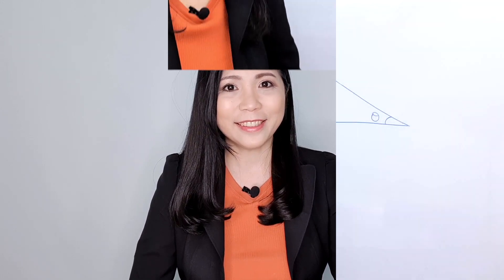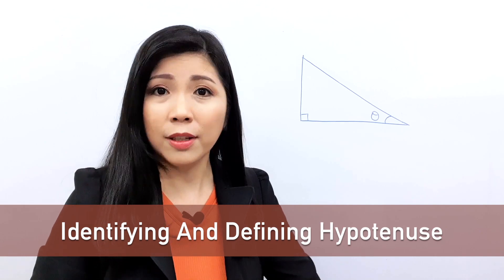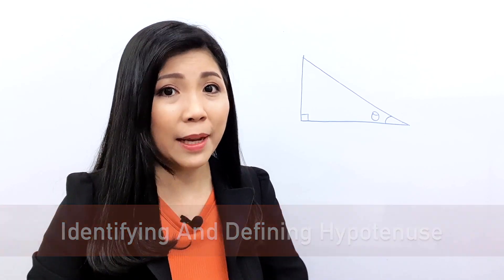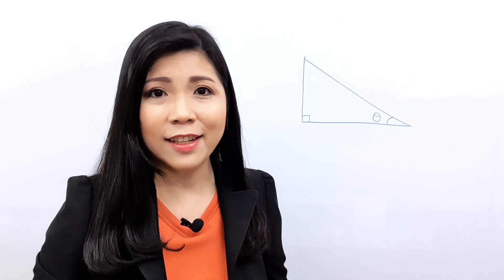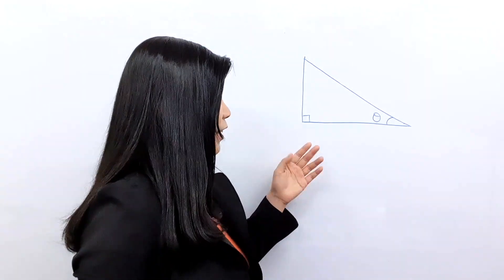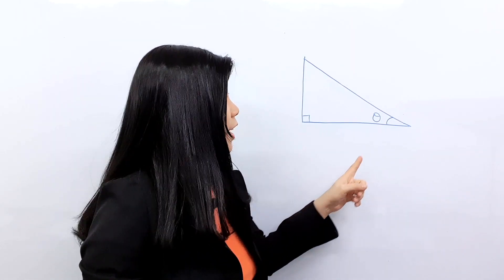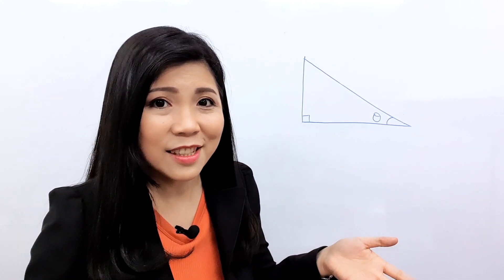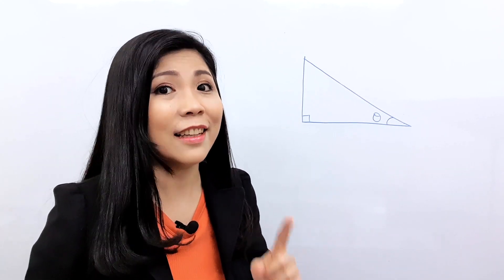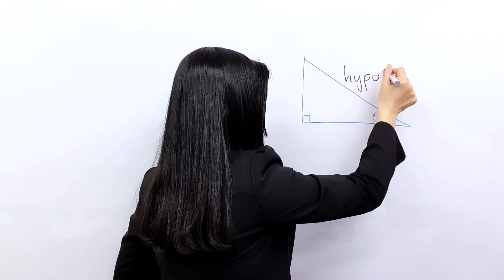Let's take a look at the first part of Pythagoras theorem. The first part is to determine and define the hypotenuse. Bear in mind that Pythagoras theorem is only for a right-angle triangle, or right triangle. So the 90-degree right angle is over here and the theta, which is the angle, is over here. The hypotenuse is the longer side of a triangle, so I label it as hypotenuse.